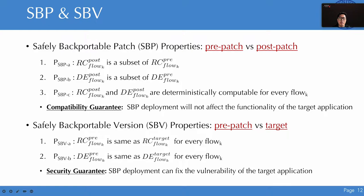With sink ability on different versions, we give the formulaic properties for SBP and SBV. For SBP, we require that both reaching conditions and data expression of the sink function in the post-patched version are a subset of the pre-patched version, and that the safe sink ability in the post-patched version is deterministically computable — ensuring backporting SBP will not affect compatibility. For SBV, we require that both reaching conditions and data expression of the sink function in the pre-patched version are exactly the same as the target version, ensuring the target version has the same vulnerability as the pre-patched version.